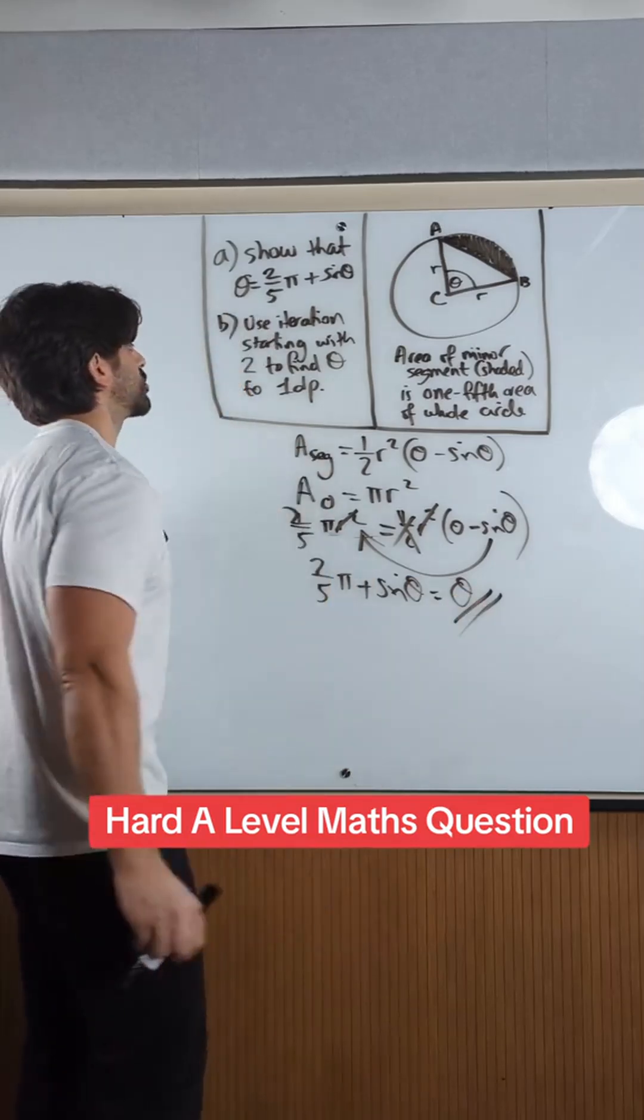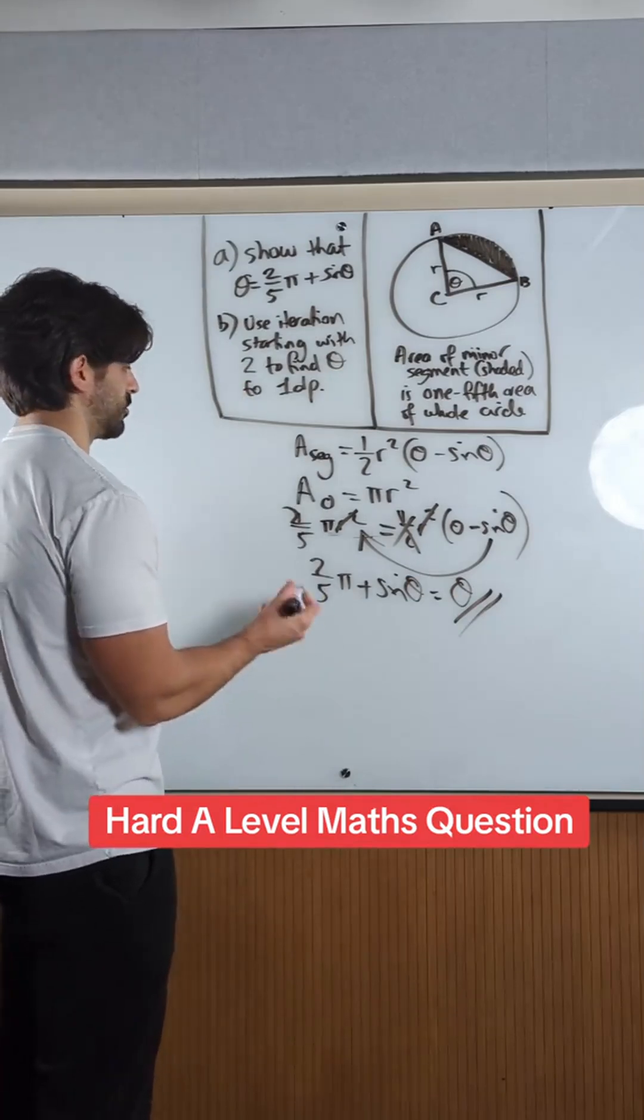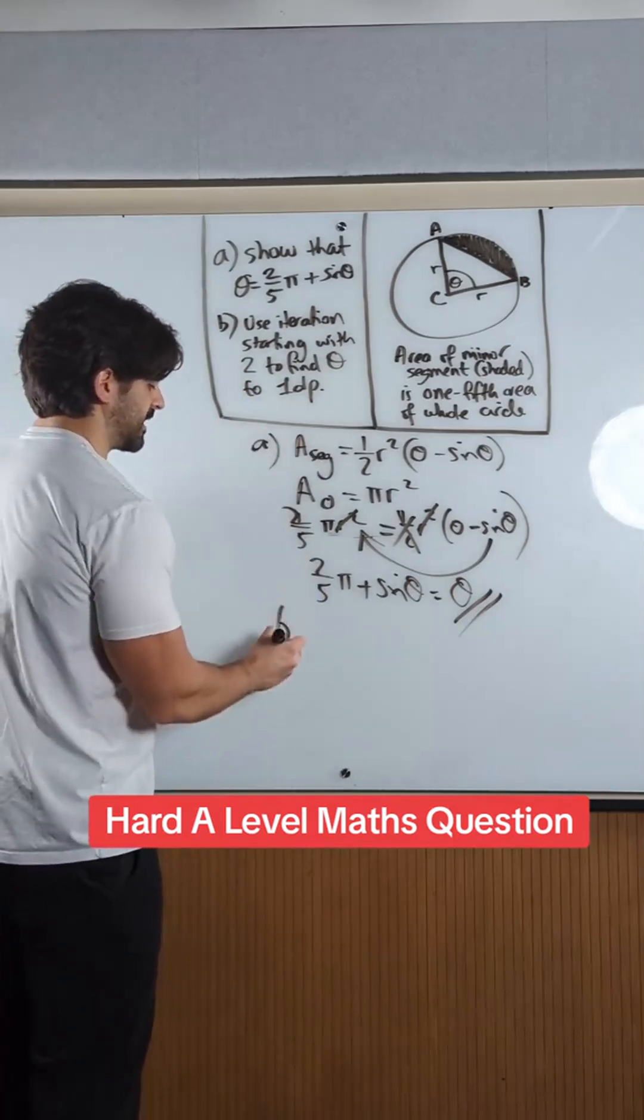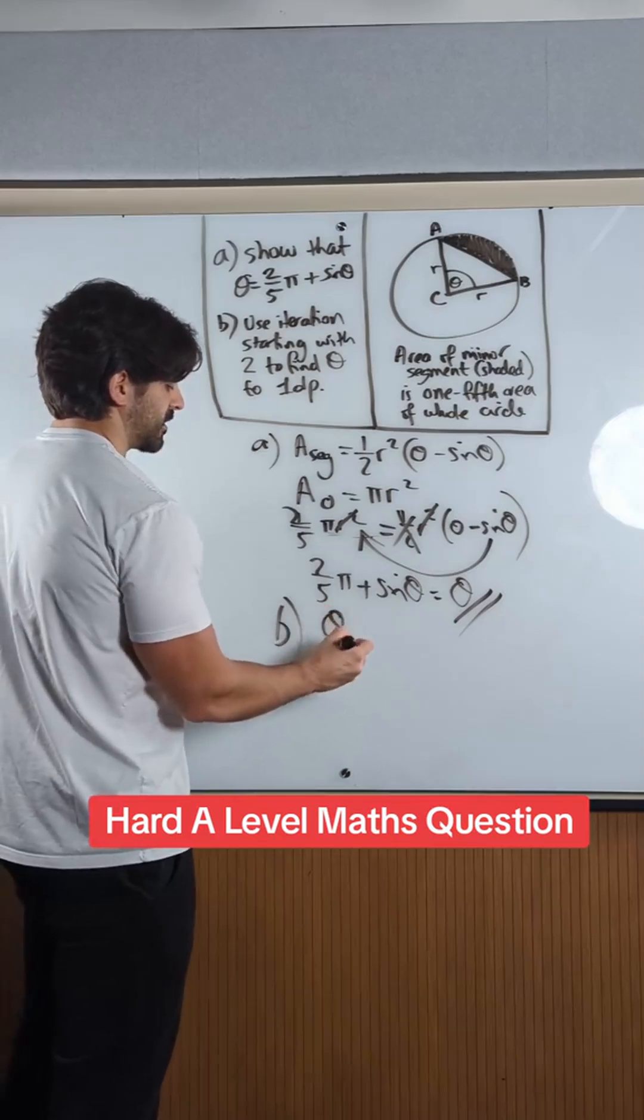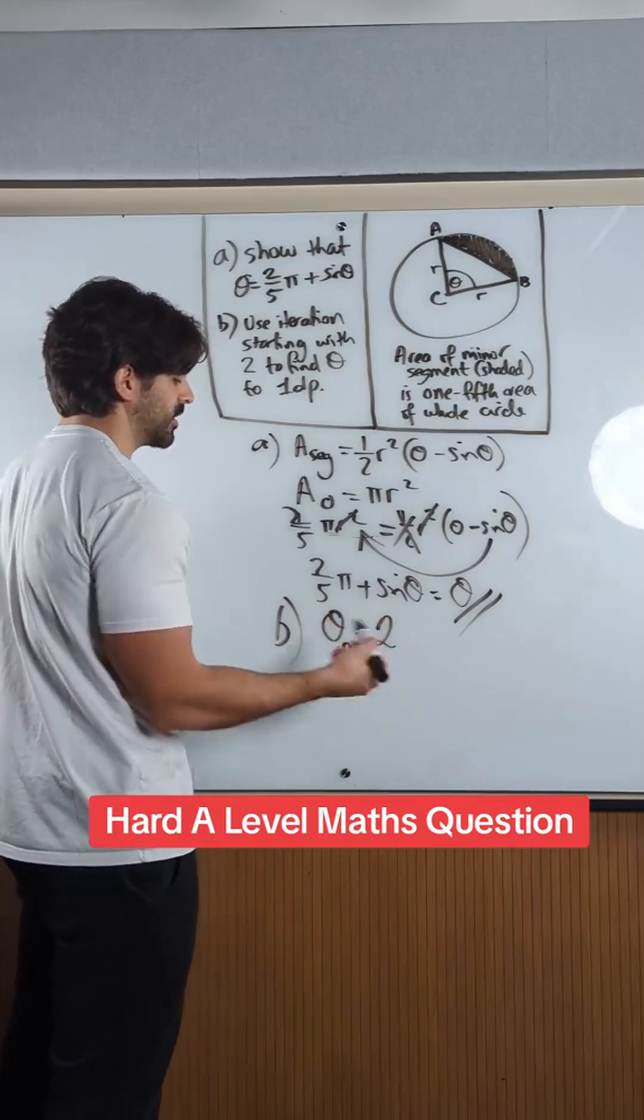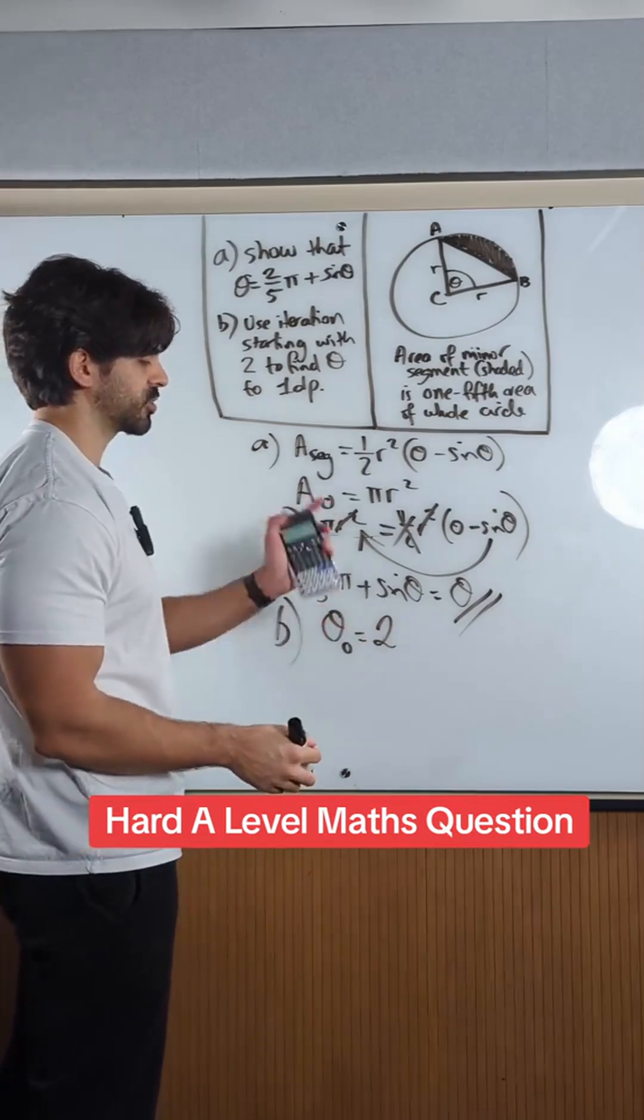Use iterations starting with 2 to find theta to 1 decimal place. This is easy. We have theta 0 is 2 and you're going to do... I'll show you the calculator in a second.